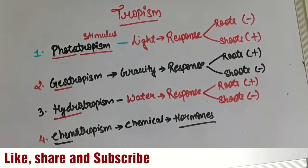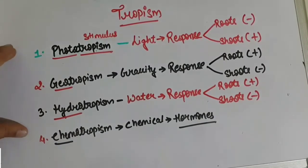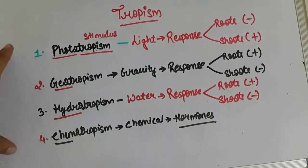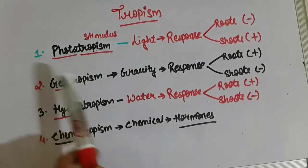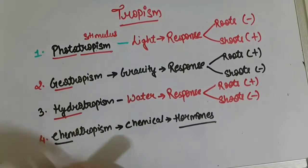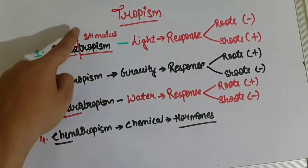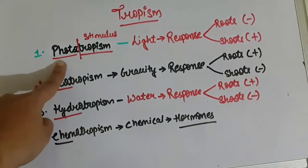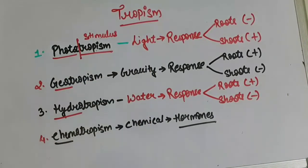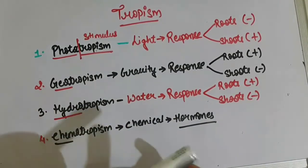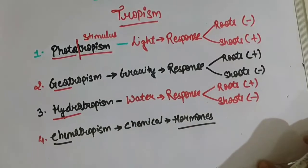Tropism has different categories. It means any movement of a plant dependent upon a stimulus. We will discuss four different types of tropism and what responses plants show to them. The first one is phototropism. If we divide this term, we get 'photo' meaning light and 'tropism' meaning response to stimulus. So phototropism is how a plant responds in the presence or absence of light.